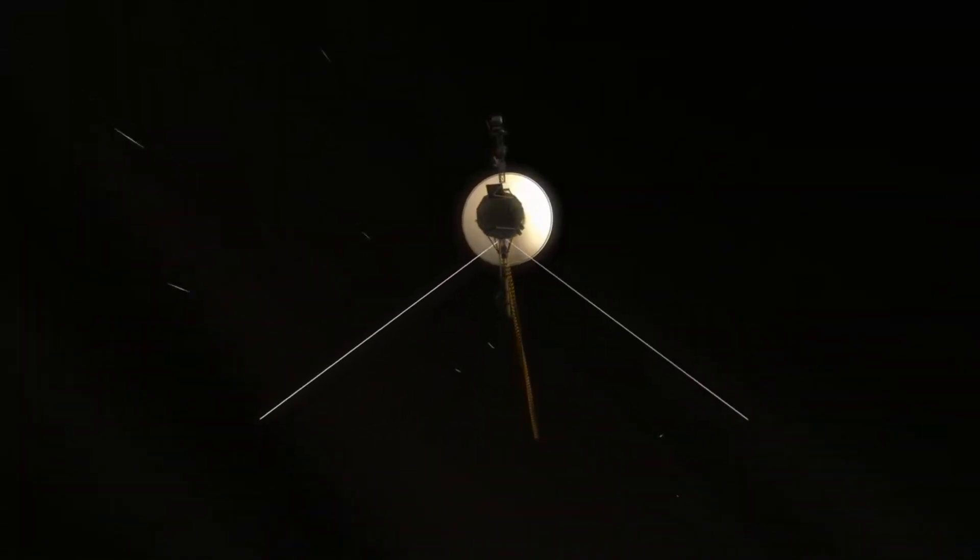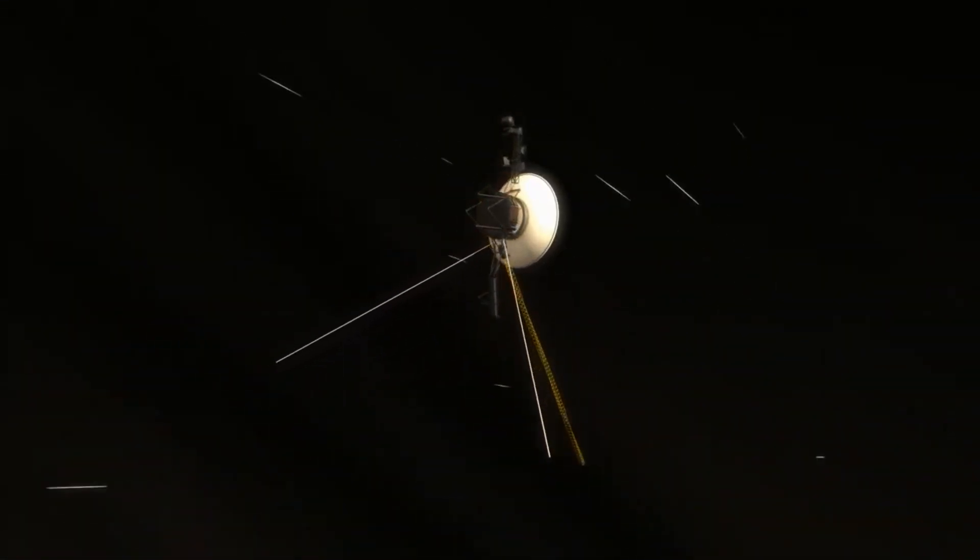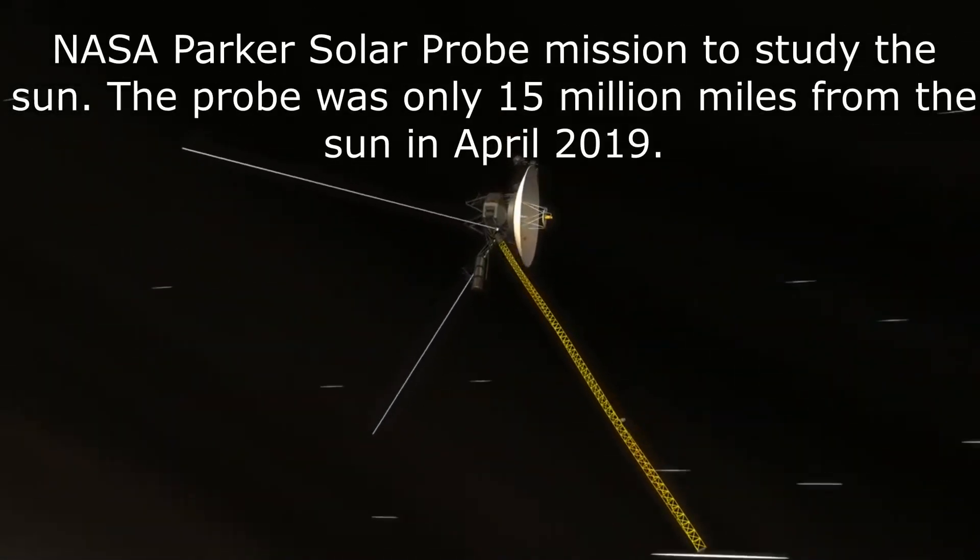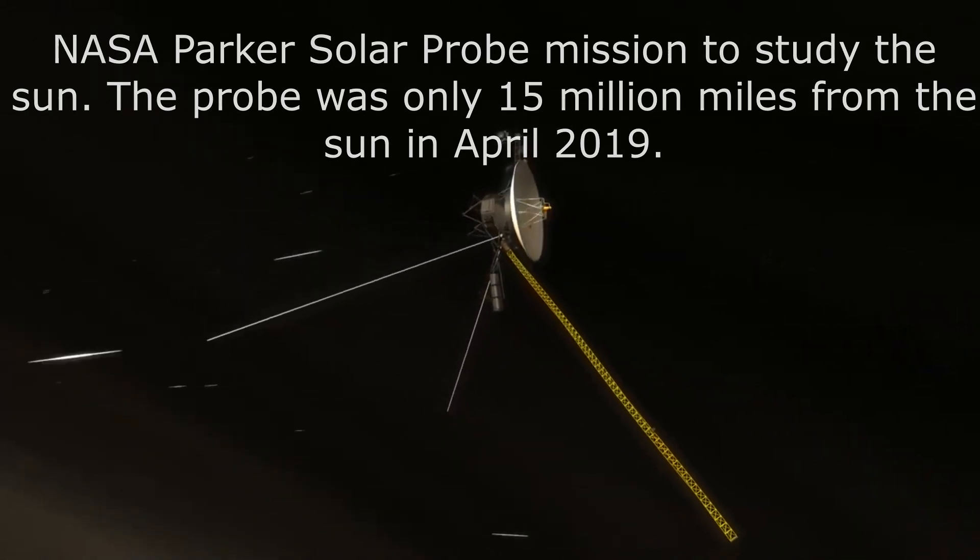A probe was launched into space as part of the NASA Parker Solar Probe mission to study the sun. The probe was only 15 million miles from the sun in April 2019.